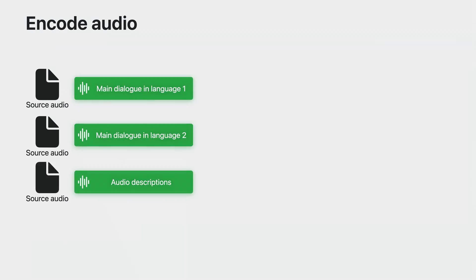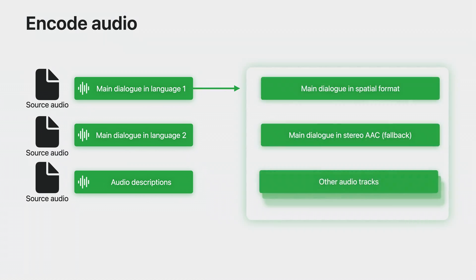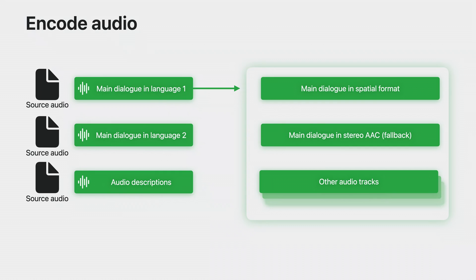For your video's corresponding audio, identify and produce the number of source audio streams you need. The number depends upon the set of spoken languages you are targeting and the roles of that audio. One role might be main dialogue, another audio descriptions. Encode these sources for delivery with HLS in mind. You may want to deliver spatial audio along with a fallback stereo audio track. This ensures a great experience for those devices supporting spatial audio and reliable playback everywhere. The HLS developer page has links to documentation on preparing audio.